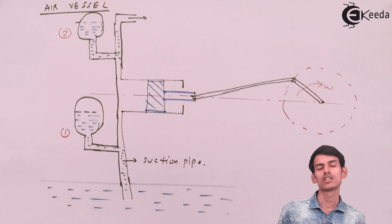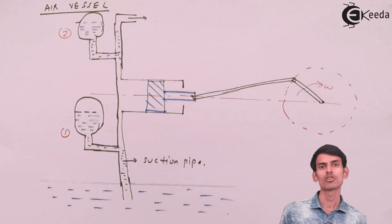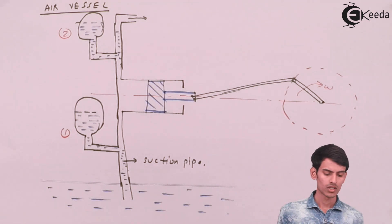Now again, in case the discharge is not continuous, suppose the discharge is intermittent, so there's discharge happening, there's some pause, again there's discharge happening. So what this air vessel does is it maintains a constant discharge.